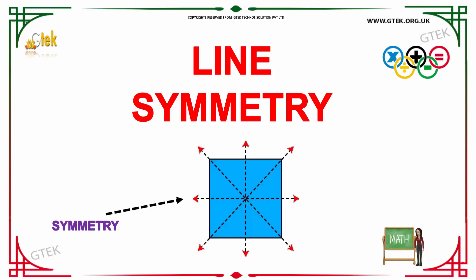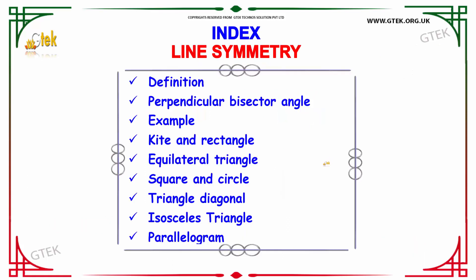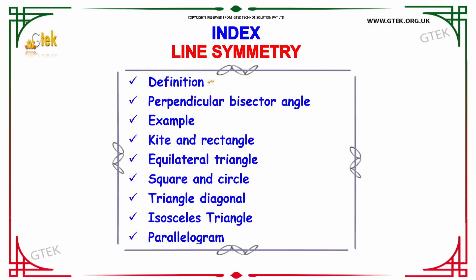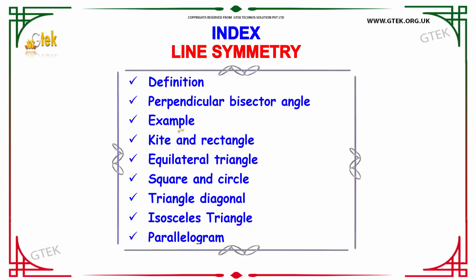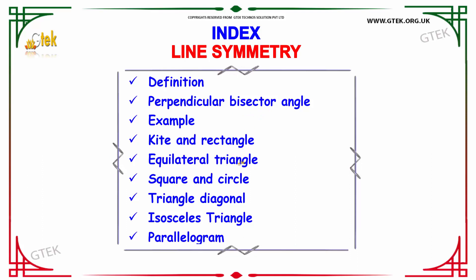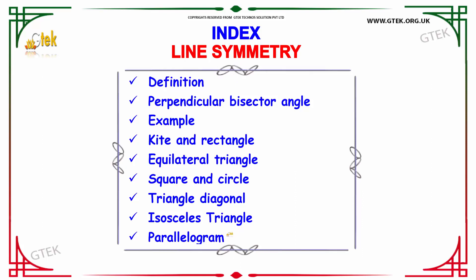Welcome to GTEK TechnoSolution Private Limited. We are going to discuss about line symmetry. The topics we will cover in this session include the line symmetry definition, perpendicular bisector angle, an example based on perpendicular bisector angle, the kite and rectangle, equilateral triangle, square and circle, triangle, diagonal and isosceles triangle, and the parallelogram.